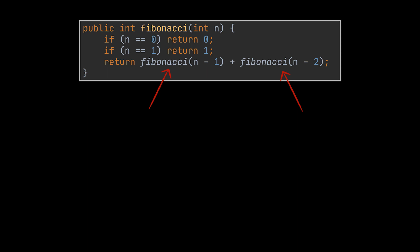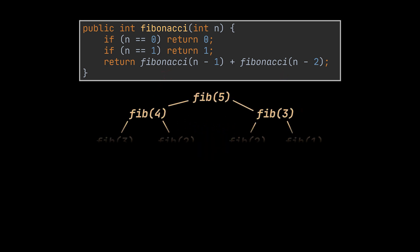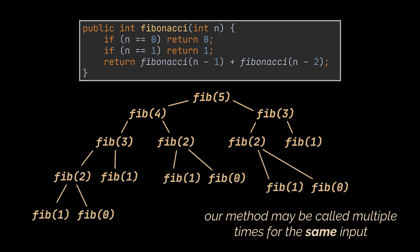Our main method is called twice: once to calculate the n-minus-1 value and once to calculate the n-minus-2 value. Therefore the time complexity of the overall method is 2 to the power n. To visualize this complexity, take a look at the diagram representing the method calls in front of you.